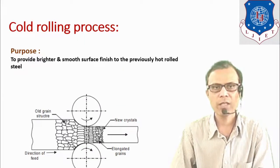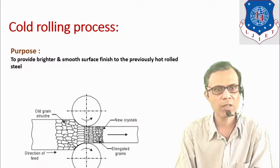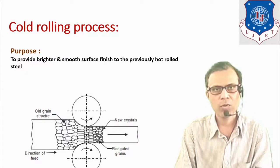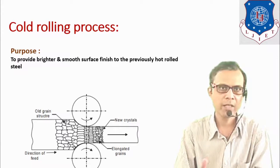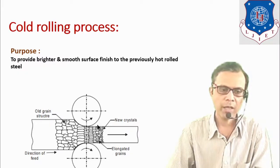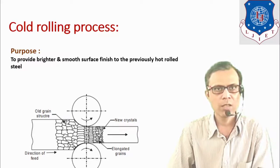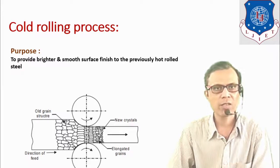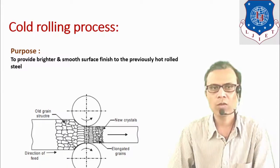Cold rolling process is similar in construction and working principle, but the product obtained by hot rolling is further fed between two rolls, and the working temperature is at room temperature but below the recrystallization temperature. Further grain structure is refined and better surface finishing can be achieved in cold rolling processes.